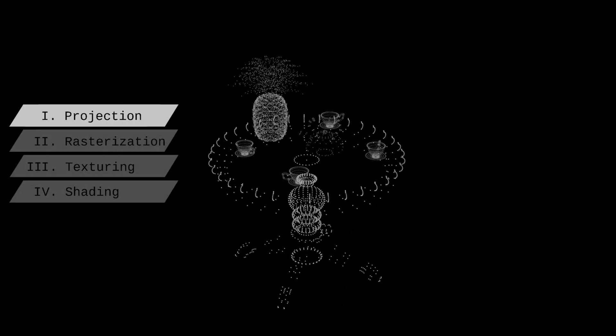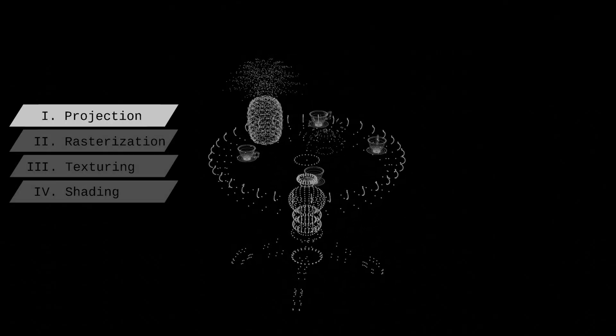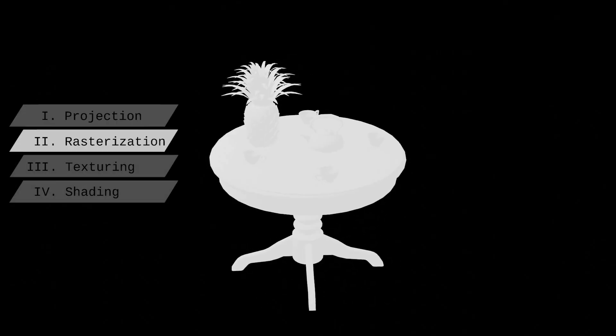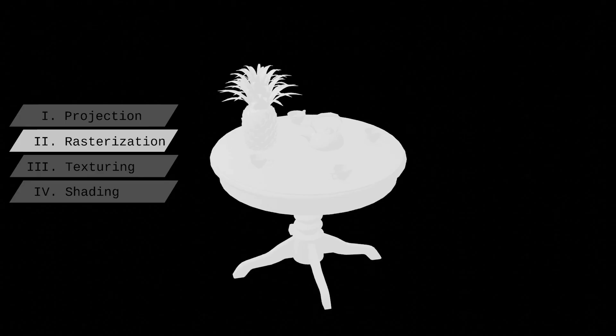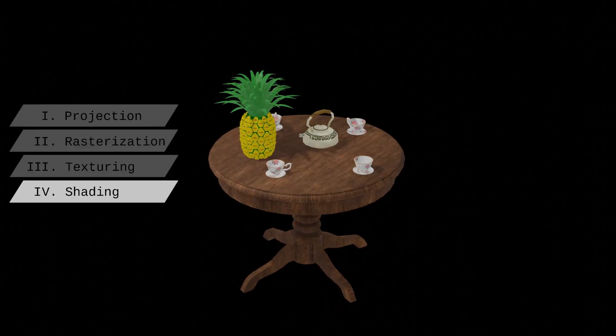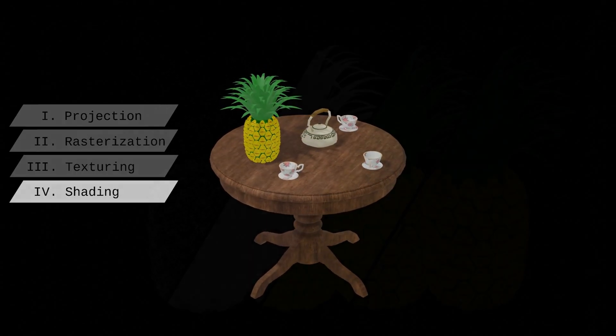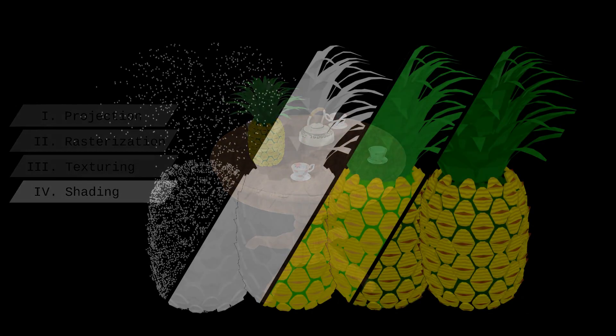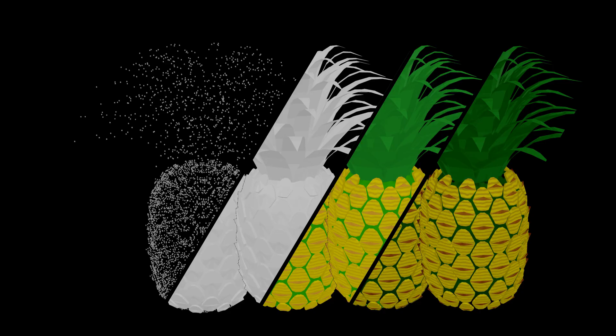Computers generate 3D images by projecting shapes onto a plane, converting them into pixels and adjusting their textures and shades. Let's learn how this works and why GPUs are so good at this.